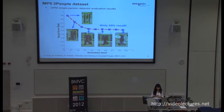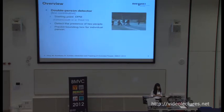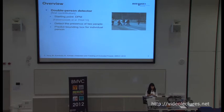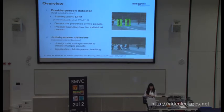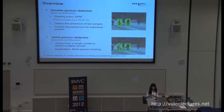It is clear that DPM is severely challenged by occlusions. To solve this problem, for the first iteration in our approach, we propose the occlusion-aware double-person detector, which is built based on the DPM approach. We detect the presence of two people and at the same time predict the bounding box for each individual person. For the second iteration, we propose a joint-person detector, which is a jointly trained single model to detect multiple persons — both double person as well as single person.